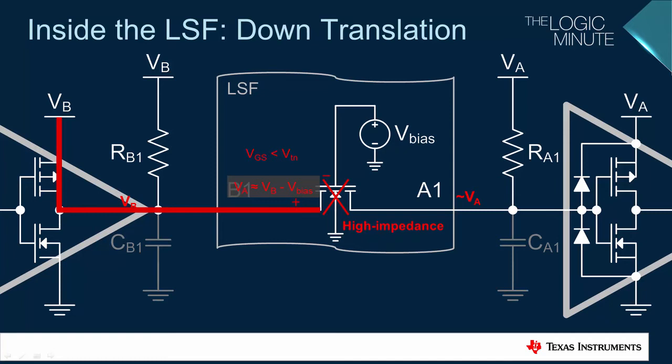Now that the A1 voltage node is essentially disconnected, the passive RC circuit will drive the receiver's input up to VA and hold it there.